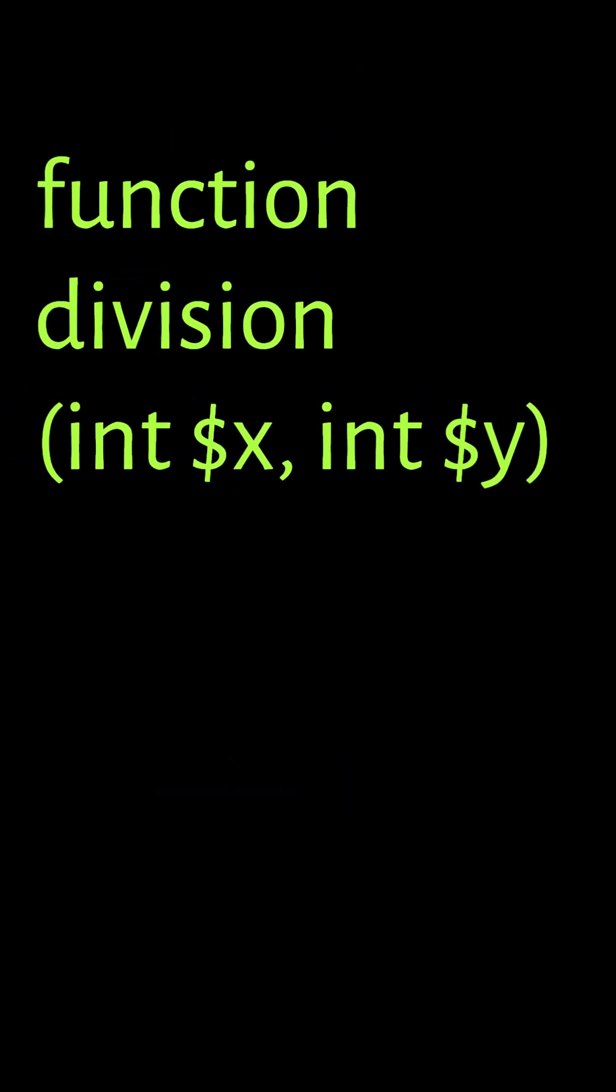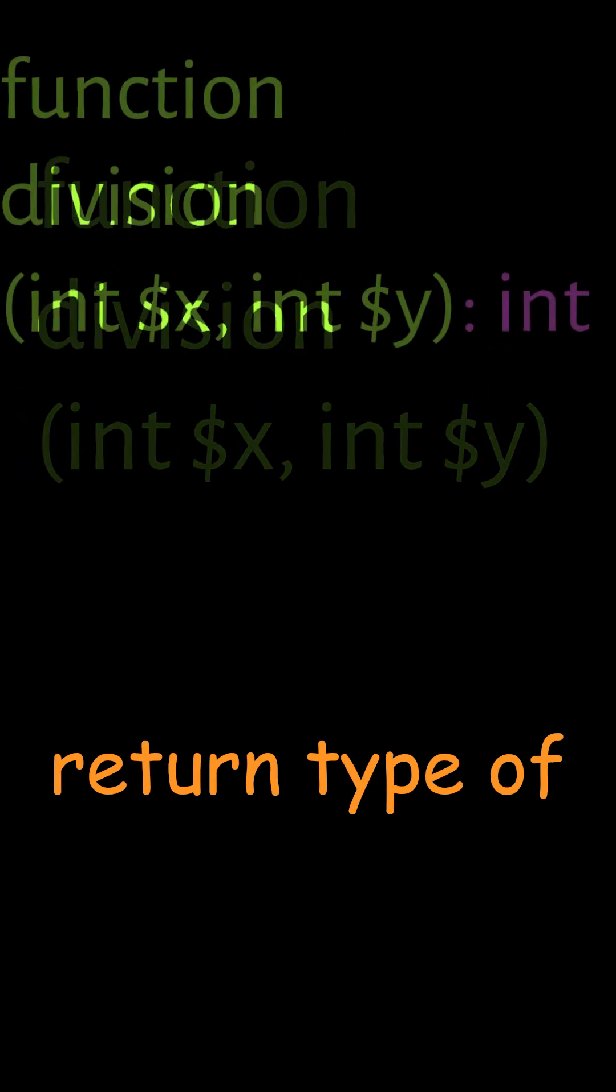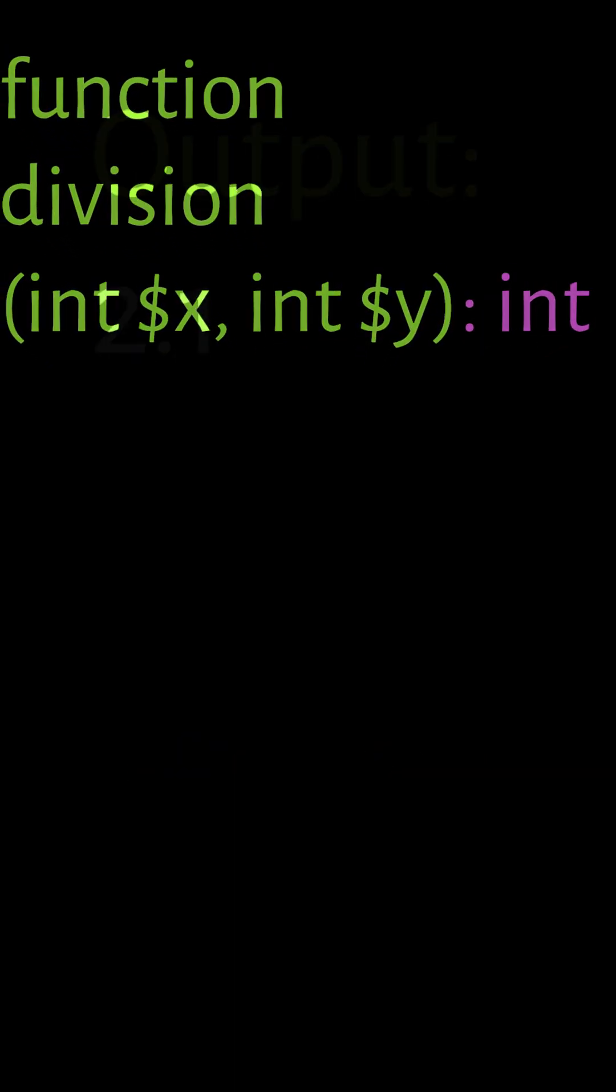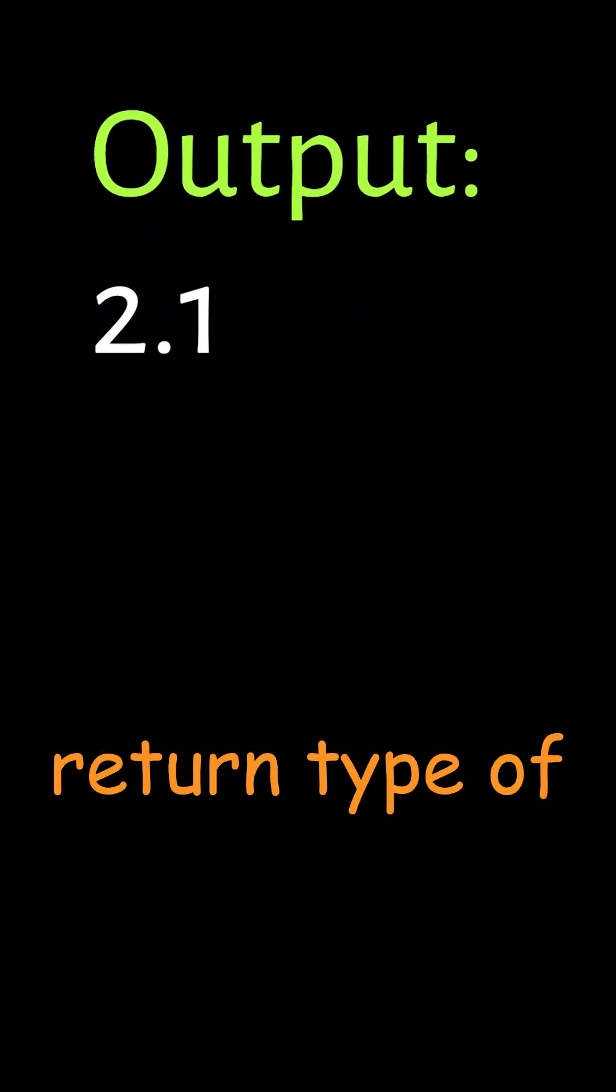Here is an example. Function division has two integer arguments. The return type of the function is mentioned after closing parentheses. There is a colon sign, then int is written as return type of integer.